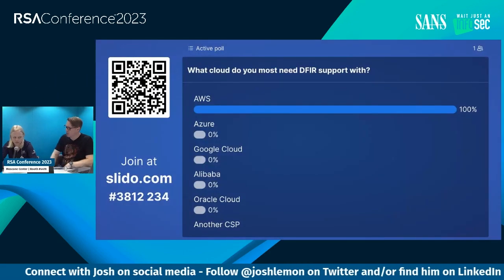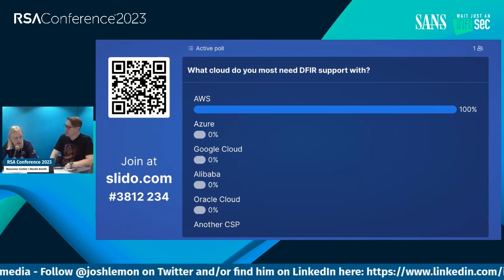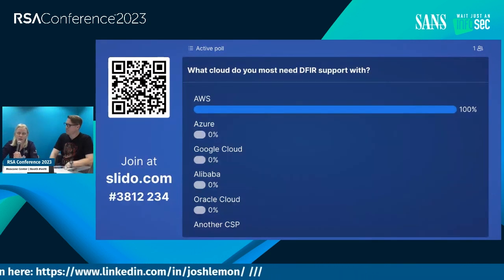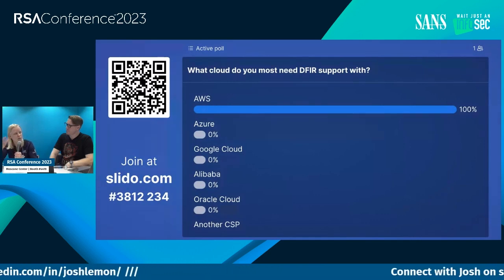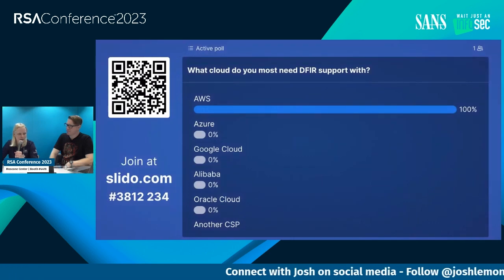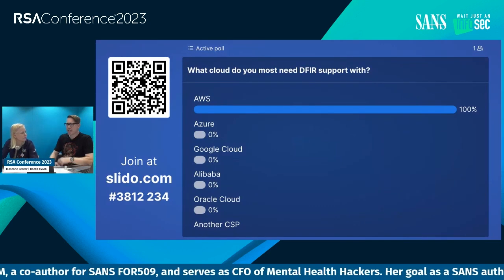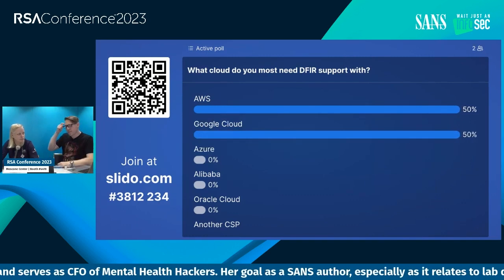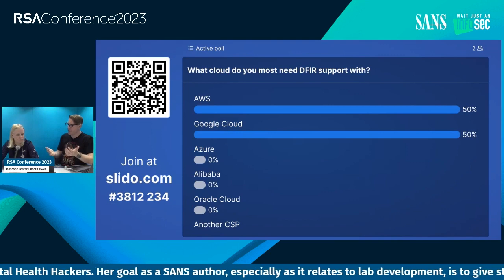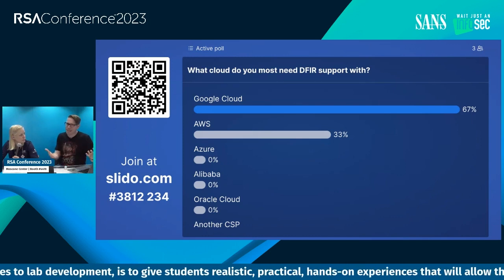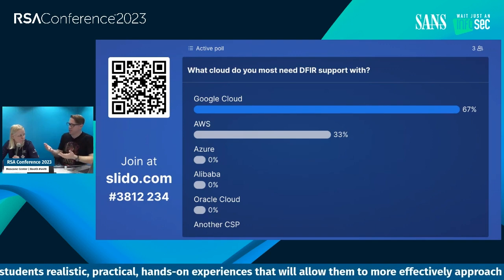To start off, let's do a poll — we want to know what types of clouds people actually use. In our FOR509 course, we focus on the major SaaS providers — Google Workspace and Microsoft 365 — and then the three major cloud providers: Google, Amazon, and Azure. We don't touch on Oracle or Alibaba, but there are so many options. It's interesting because what people use changes by region — I'm from Australia, so what I see in the APAC region is very different from the US.